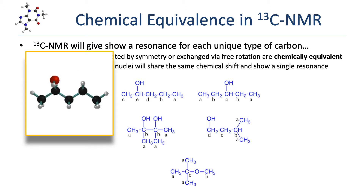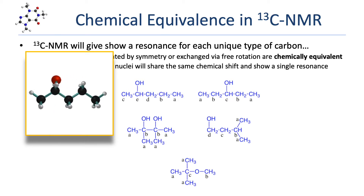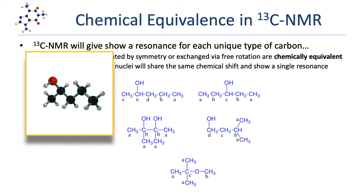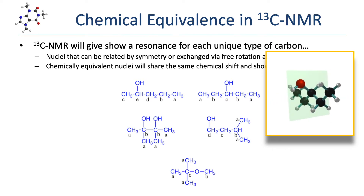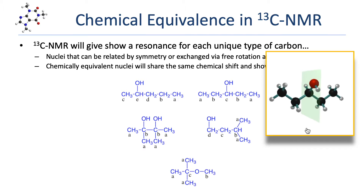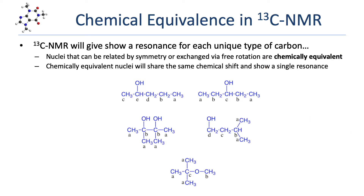Looking at the first example molecule, there are no mirror planes that can reflect one carbon to any other carbon, and there are no carbons that can be indistinguishably exchanged via free rotation. That means all five carbons are chemically unique and will give rise to five separate resonances. Compare that to the next molecule, which has a mirror plane going down the carbon-oxygen bond. That mirror plane reflects the ethyl group on the left to the ethyl group on the right. The carbon on the mirror plane is unique, the next carbons outward are labeled B (chemically equivalent), and the outermost carbons are labeled A (also equivalent). This molecule shows only three resonances in a C13 NMR spectrum.